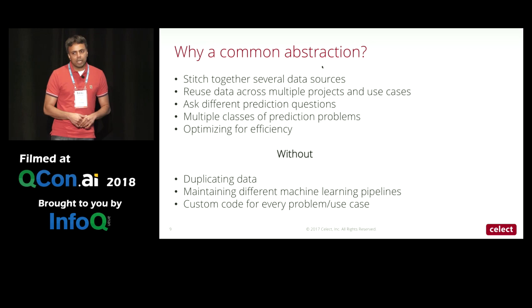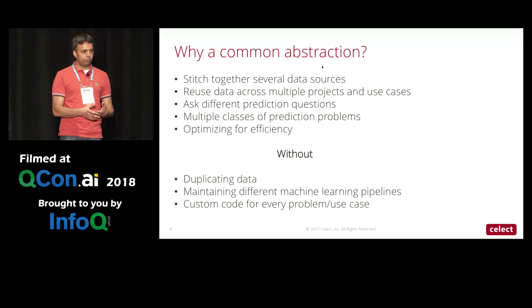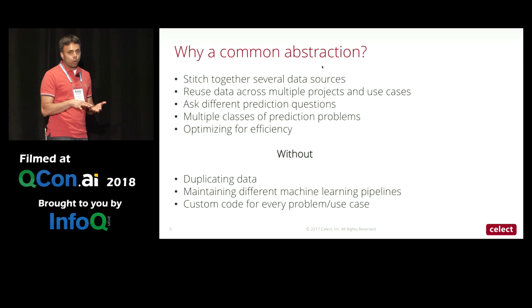We also found that when we started working on a dataset and built some models, someone would immediately want to predict something else. When data and models were stored in very specific forms — like feature vectors — predicting something different meant building one more pipeline. With this abstraction, which is not tied to what we are predicting, asking a different prediction question is really easy.